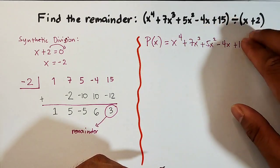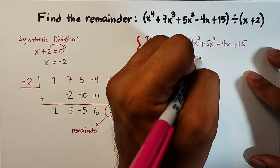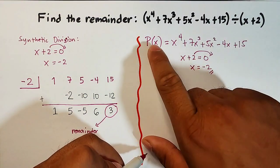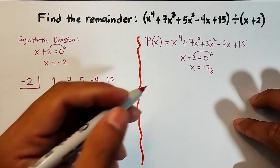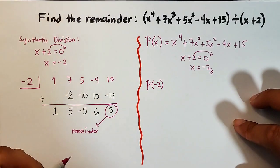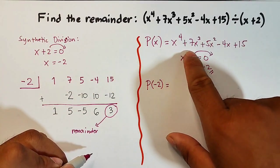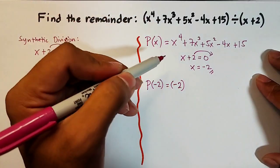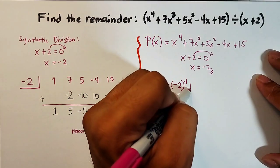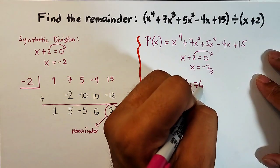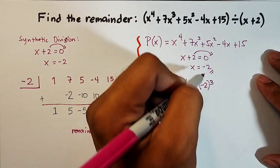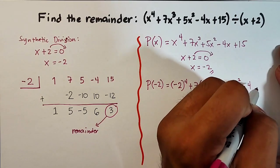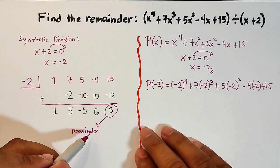So in the divisor, we set x plus 2 equal to 0, transpose to get x equals negative 2, and this becomes the input to our function. It becomes p of negative 2. All the variable x's in the polynomial will be replaced by negative 2, so it becomes: negative 2 to the 4th power, plus 7 times negative 2 cubed, plus 5 times negative 2 squared, minus 4 times negative 2, plus 15.